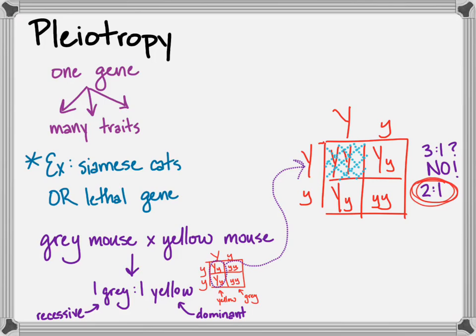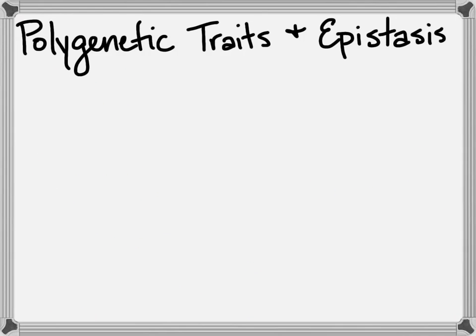So pleiotropy is when one gene affects many phenotypes, but you can also have many genes affecting a single phenotype or a single trait. And so, one common example of this is epistasis, so that's what we're going to focus on here.